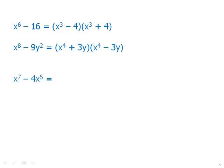This next example has odd exponents, but notice we can factor out a greatest common factor first. Factoring out x to the 5th leaves x squared minus 4. We've already written it as a product, but we can factor further — x squared minus 4 is a difference of two squares. Factoring that gives the fully factored form of the original binomial.